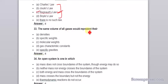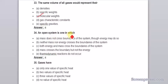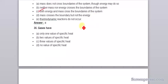The same volume of all gases would represent their molecular weights. An open system is one in which both energy and mass cross the boundary of the system. Gases have two values of specific heat.